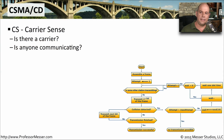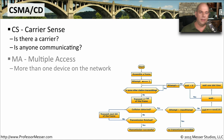Let's start with CSMA/CD and break down what this acronym really means. The CS means carrier sense — the devices on the network are going to listen for a carrier before they begin transmitting over the network. The MA stands for multiple access, meaning there will be many devices on this same network that will need to communicate.